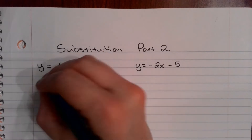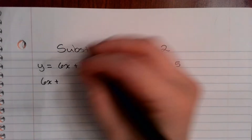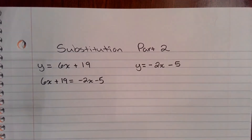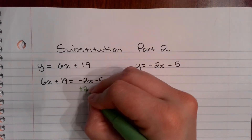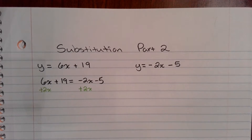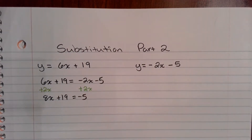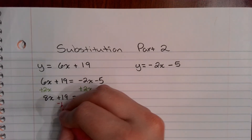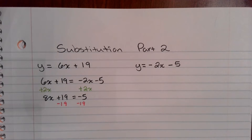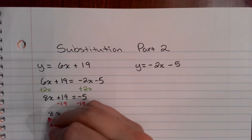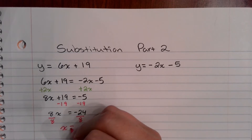Both equations are equal to y, which means they're equal to each other. So we have 6x + 19 set equal to -2x - 5. The first thing we want to do is get x to one side. I move the smaller x, which is that -2x, and add 2x to both sides. That leaves me with 8x + 19 = -5. Then I subtract 19 from both sides, giving me 8x = -24. Dividing both sides by 8, I get x = -3.